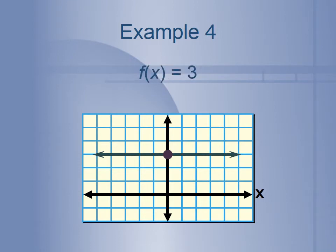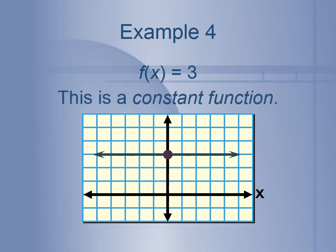If we write that in function form, it would be f of x equals 3. So whatever x value we plug in — x equals 1, 2, 3, 4 — we always get 3, which gives us that horizontal line. Anytime we have a horizontal line where y equals a constant or f of x equals a constant number, it's called a constant function. That's a new vocabulary word and a new type of function: constant function.